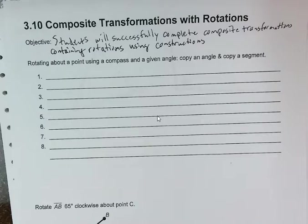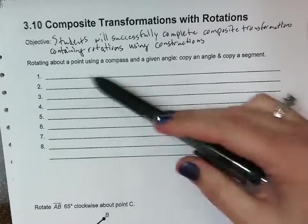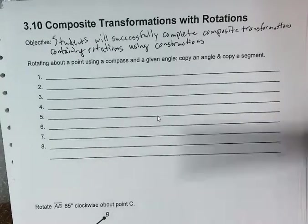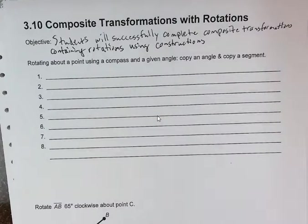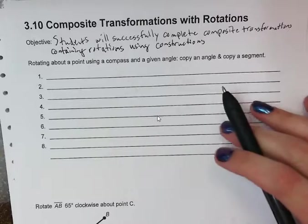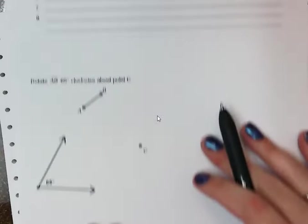To start with, I'm going to skip these steps and put them up at the end. Copy an Angle and Copy a Segment are the two constructions that we need to use to do these rotation constructions. So we're going to slide down to the example.